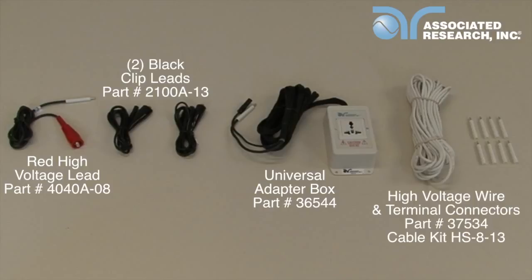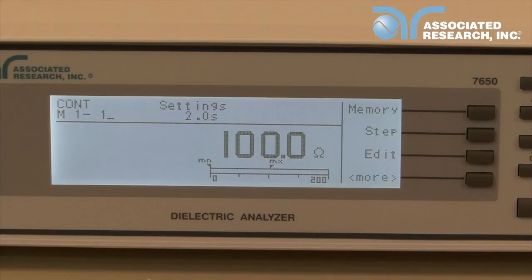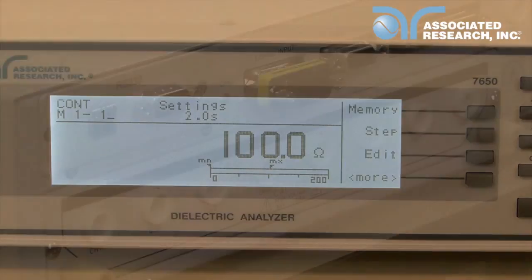An instrument with scanner channels also comes with 100 foot of high voltage wire and high voltage terminal connectors. For this demonstration, we're going to show two separate test setups. The first setup will use the scanner channels to test continuity and DC high pot. The second will use a universal style adapter box on a three prong product.